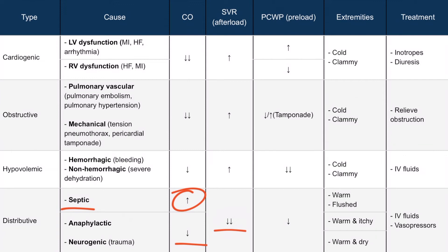Due to the profound vasodilation, venous return is decreased, which causes decreased pulmonary capillary wedge pressure. Because of the low vascular resistance, there is increased blood delivery to the periphery, which causes the extremities to be warm. In septic shock, the extremities are flushed due to the increased cardiac output. In anaphylactic shock, they are itchy — a helpful way to remember this is all that histamine being released, causing the body to be warm and itchy, similar to an allergic response. In neurogenic shock, because of the lack of sympathetic stimulation, the apocrine glands are not activated and the skin is dry. Treatment of distributive shock mainly consists of giving IV fluids and vasopressors to restore blood pressure.